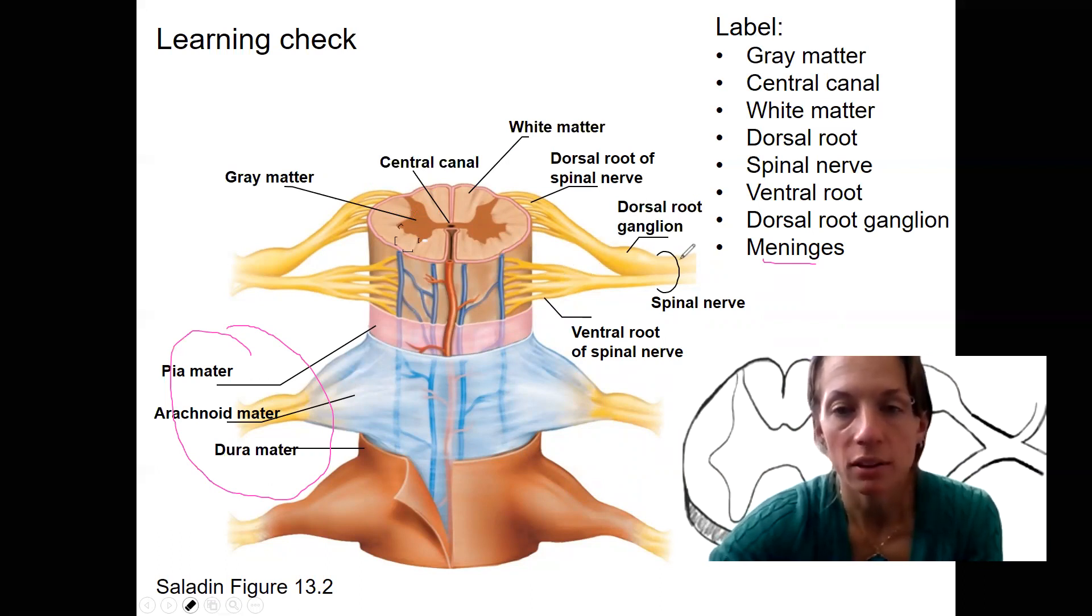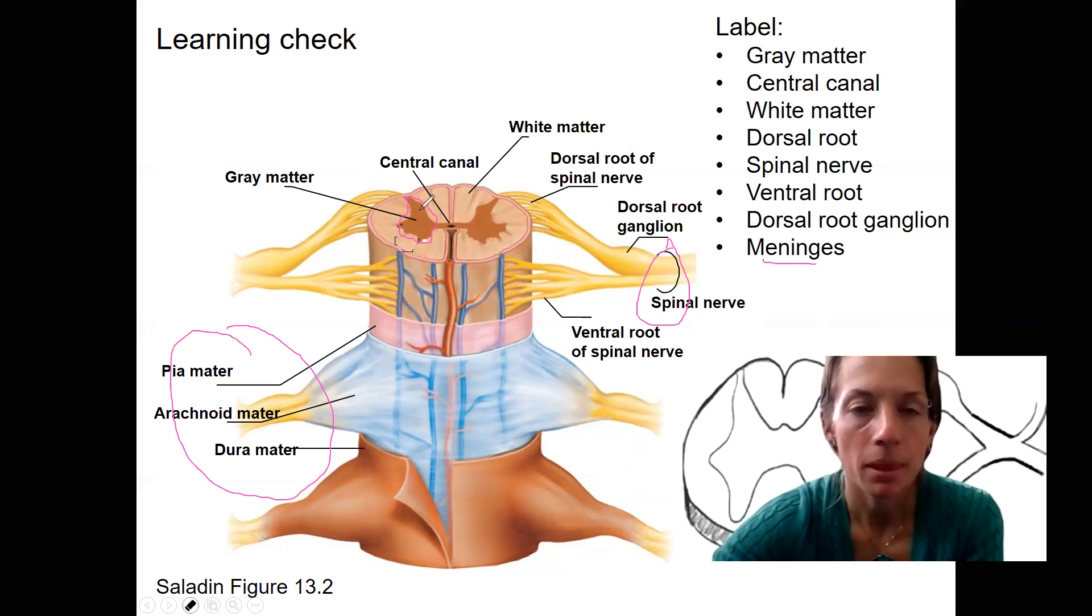The ventral root and the dorsal root. It's fine to call those anterior and posterior. Dorsal root ganglion with the spinal nerve is where those twos, the sensory and motor components have met, come together. White matter, gray matter. You should also be able to label the different horns here: the dorsal horn and the ventral horn.